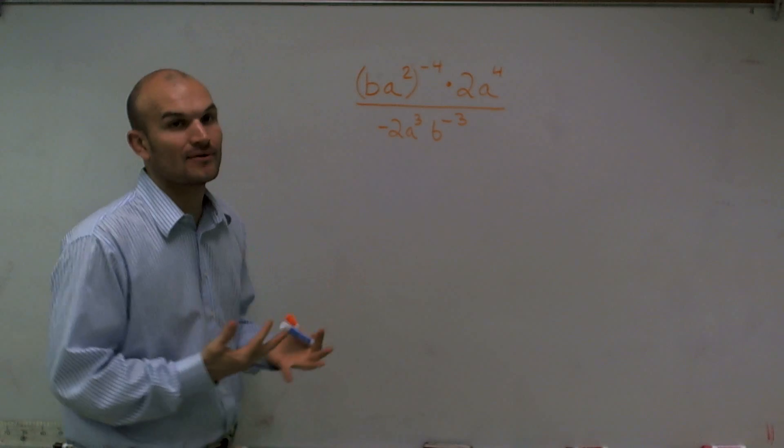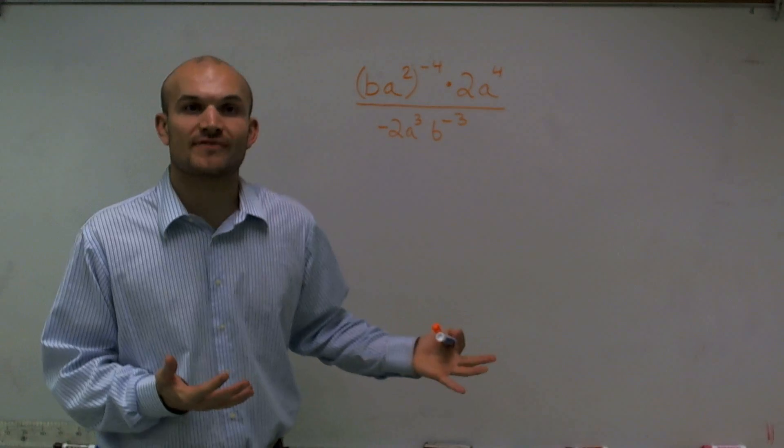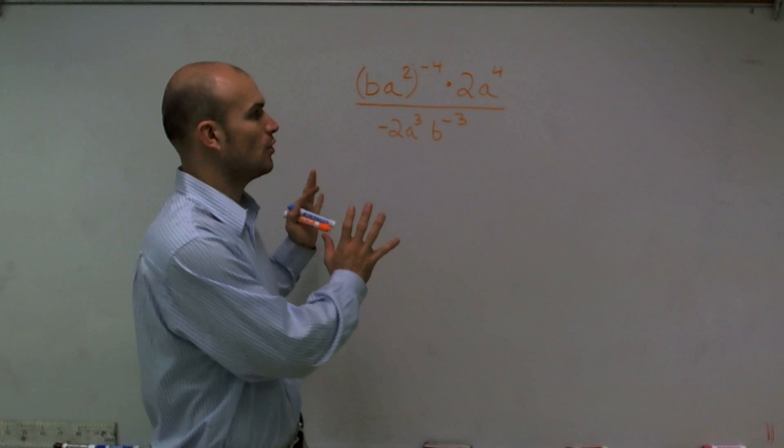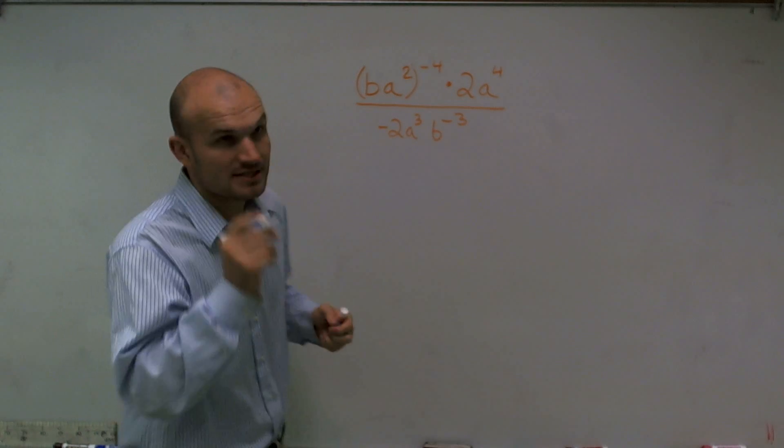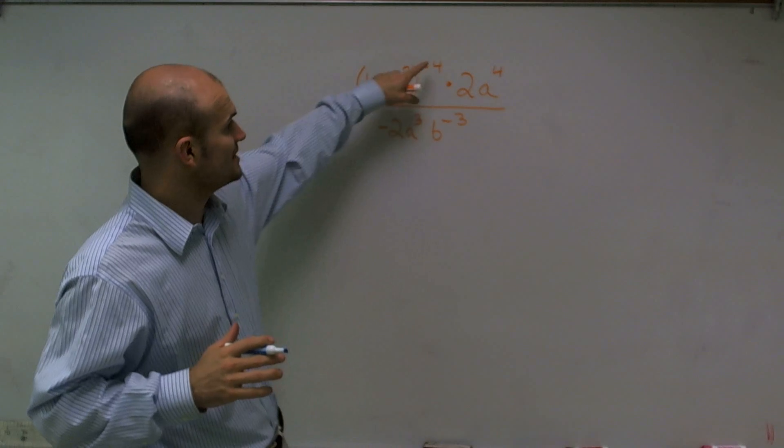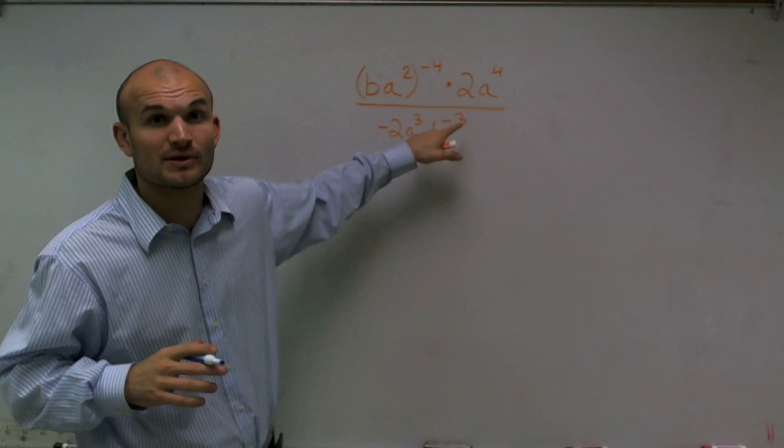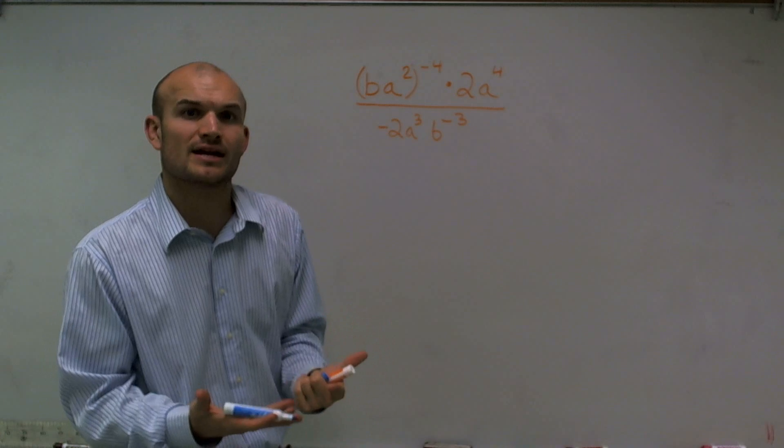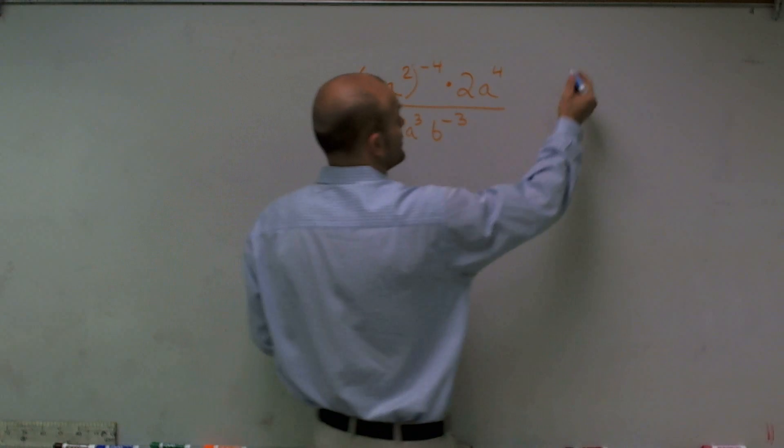So the first thing I want to do is remind you of a couple properties of exponents that we're going to use to hopefully try to make this a little bit easier on you. So the first thing we need to look at is negative exponents. I see that I have a negative exponent here and a negative exponent there, so we need to understand how our negative exponents are going to affect our problem.